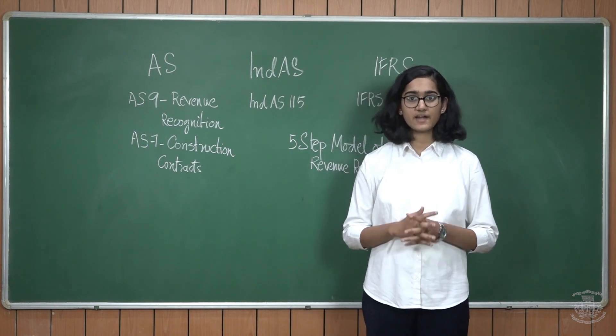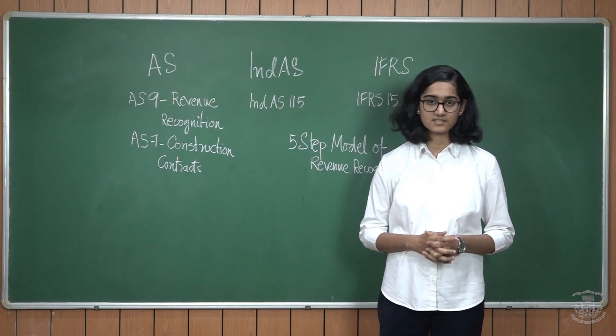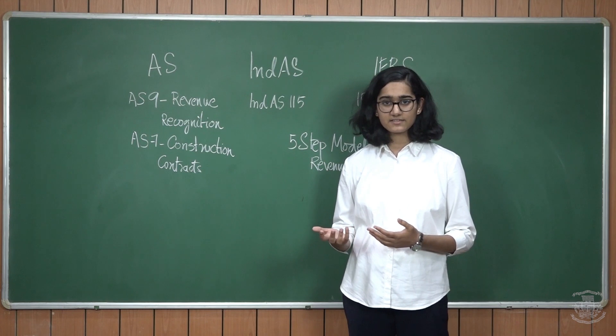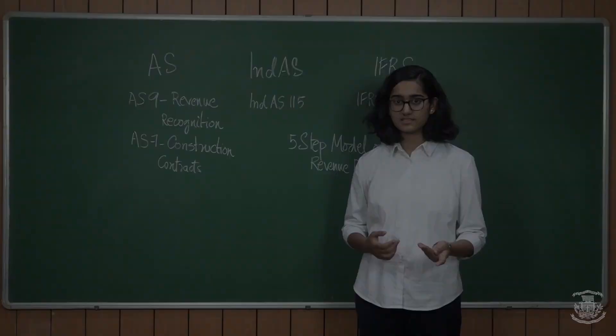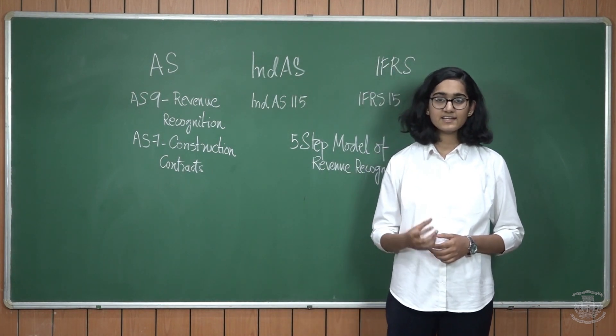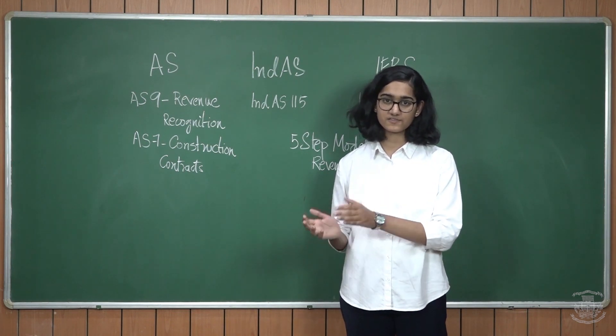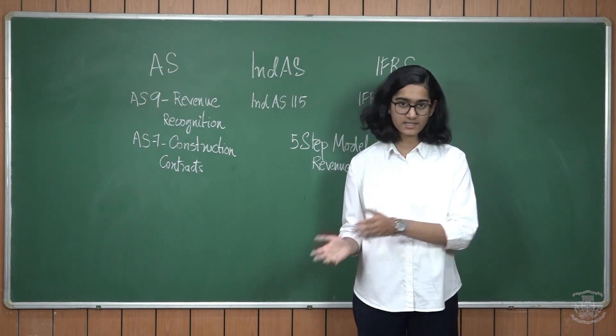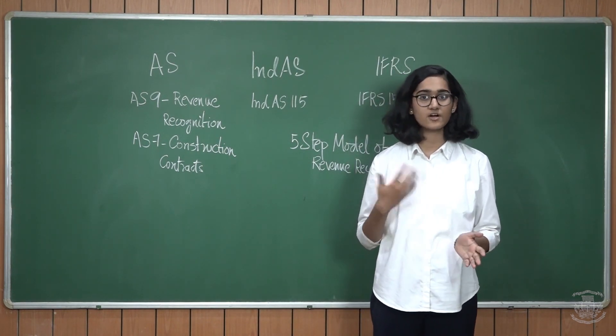AS9 deals with recognition of revenue arising from ordinary course of business which can be anything like sale of goods or rendering of services or any activities that might bring either interest or dividend or royalties. The most important concept in AS9 is that revenue will be recognized only when there is a proper transfer of the significant risk and rewards of ownership from one party to another party. Unless there is no proper transfer, you cannot recognize revenue.